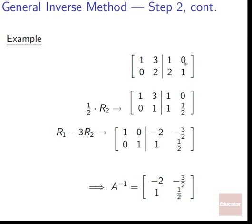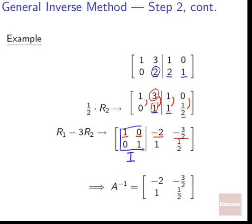Continuing: multiply row 2 by 1 half to get [0, 1 | 1, 1/2]. Now eliminate the 3 in row 1 by subtracting 3 times row 2: row 1 becomes [1, 0 | -2, -3/2]. We now have an identity matrix on the left side. The right side — [-2, -3/2; 1, 1/2] — is our inverse matrix A inverse. Bring that down and we have our answer.